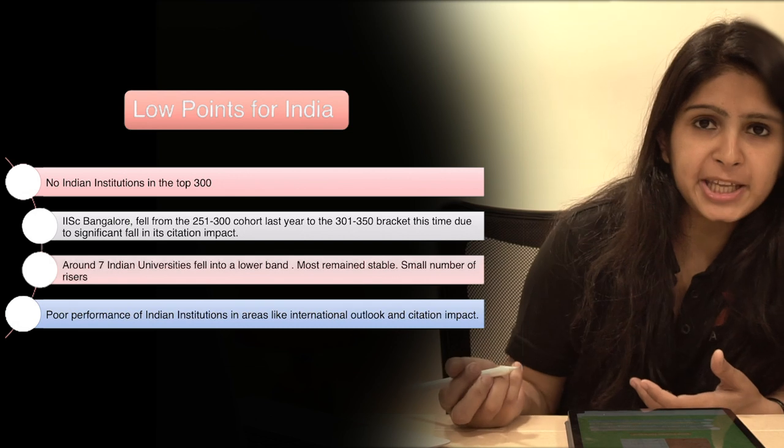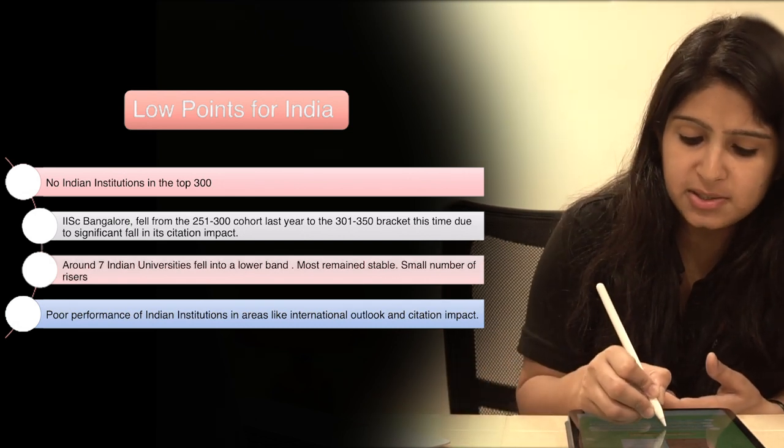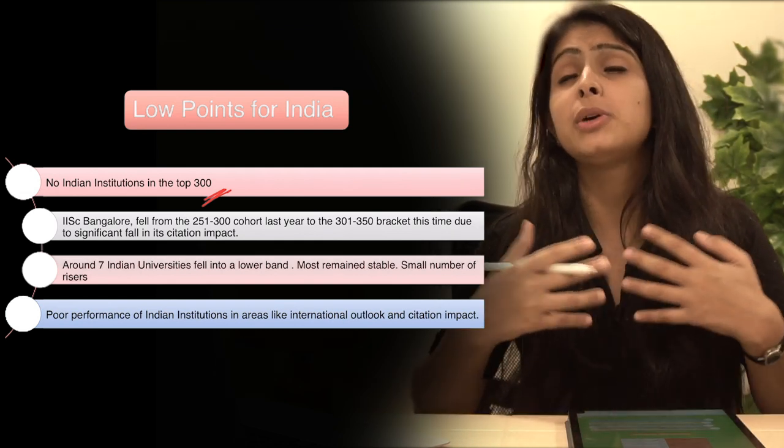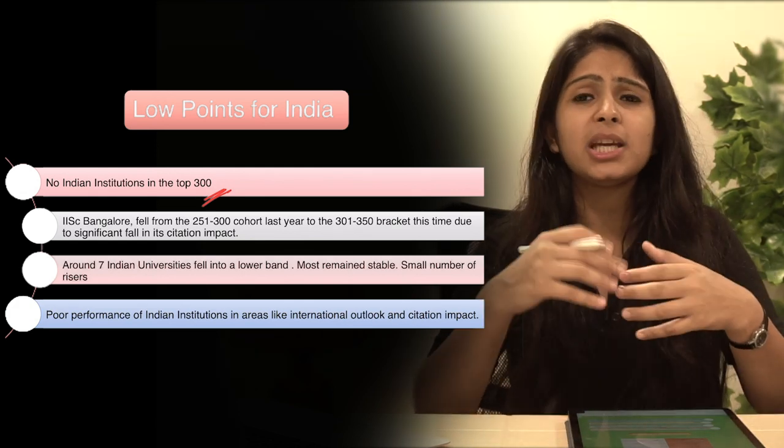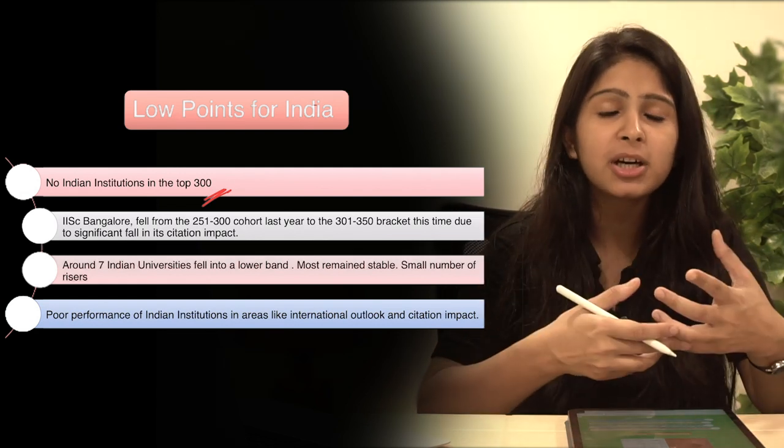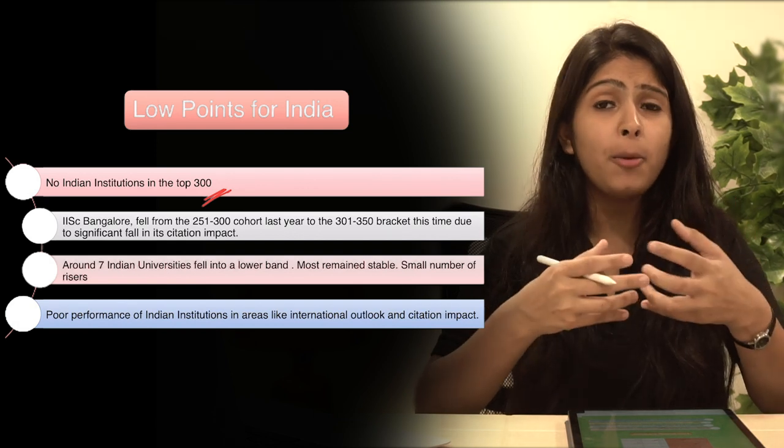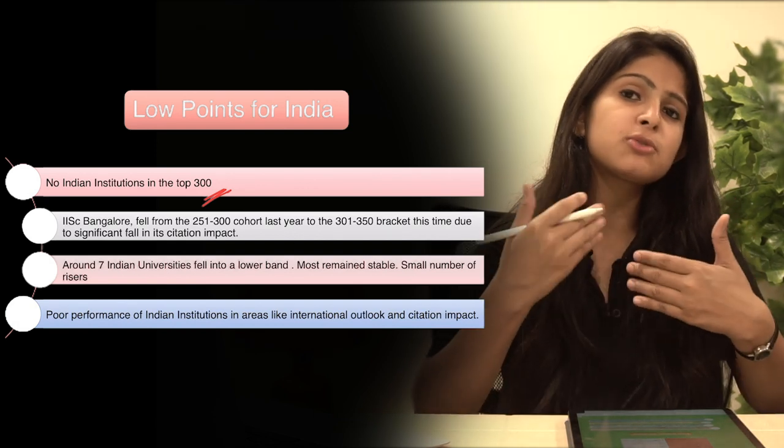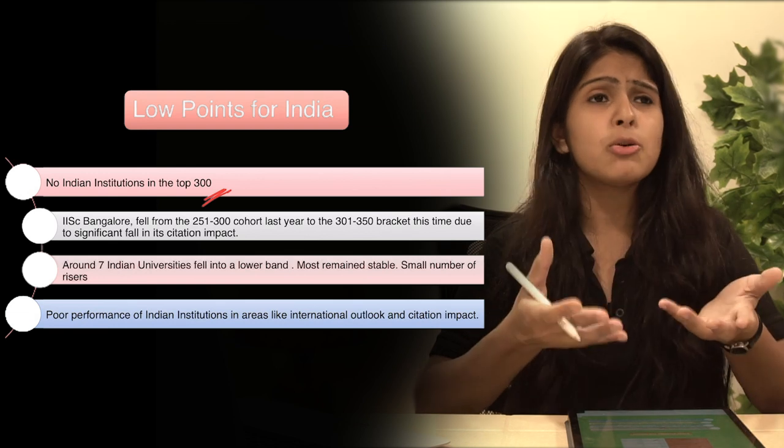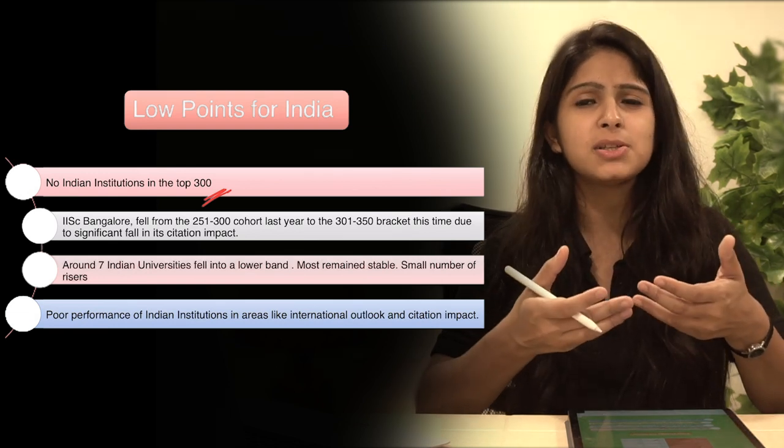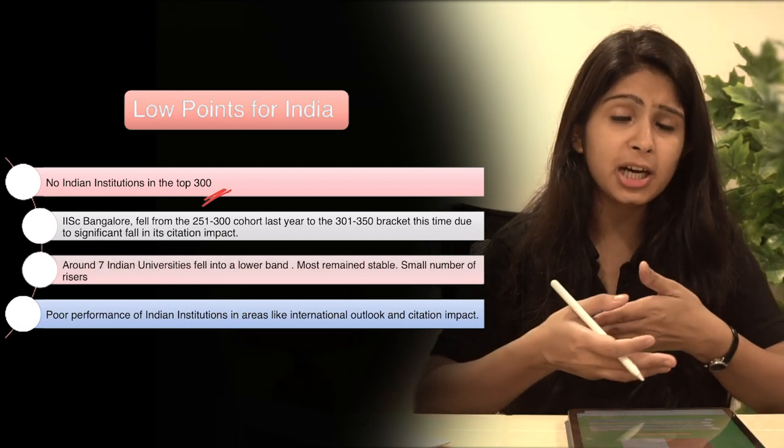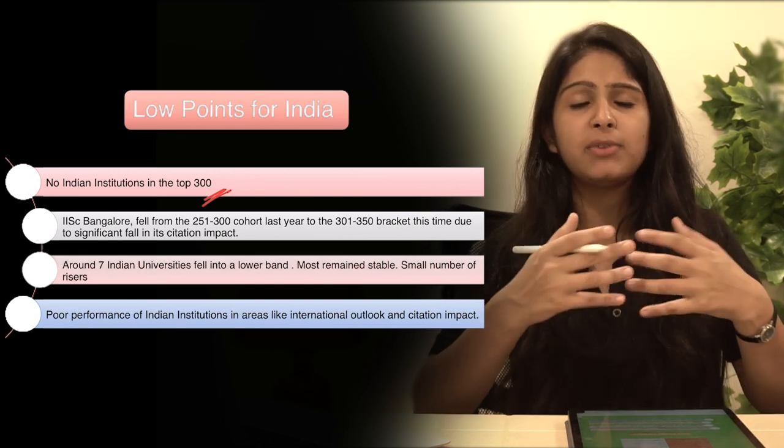So as you see in the diagram, the first point is no Indian institutions in top 300. So our government is trying to make our institutions more international. So we hear the news that we will open so many IITs and IIMs will open, so many of these institutions are there, but are these institutes efficiently performing, are they doing well in their knowledge transfer? So if there is no Indian university in top 300, this is the most disappointing news for India.